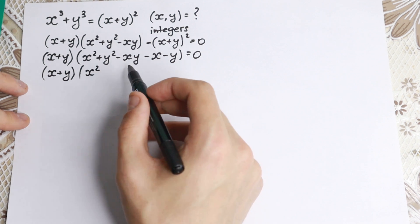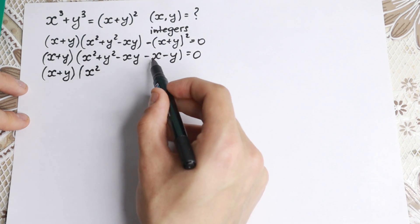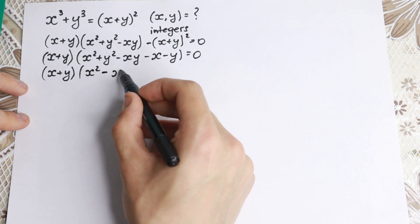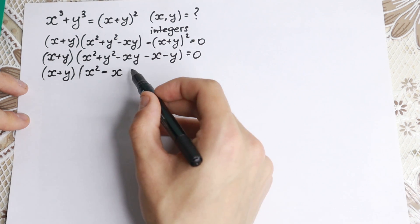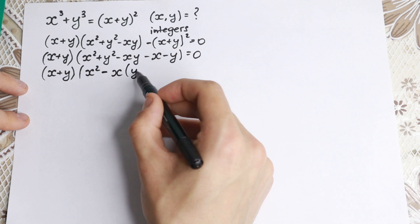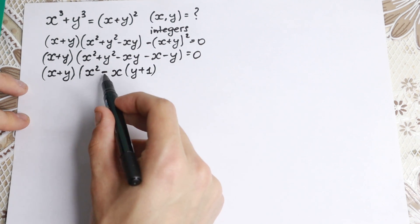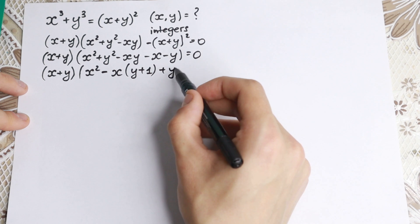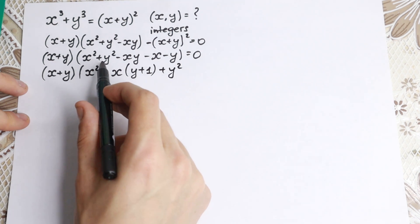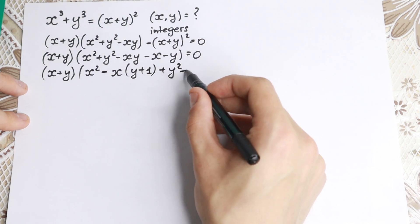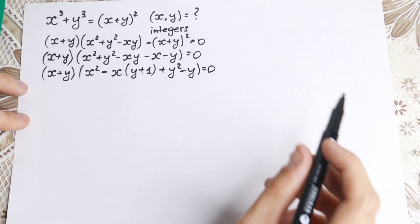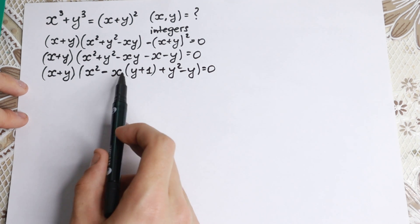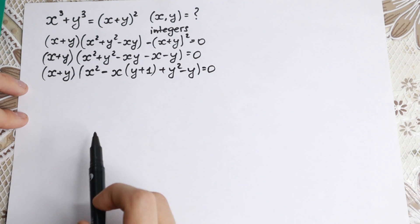Right here I just wanted to group x, y, and this x. If I factor it out, I have minus x. Right here we have (y+1), because we factor out minus. And of course plus y² in the end — this element y² minus y — equal to 0. One really interesting moment: I just factored here and changed the order a little bit.